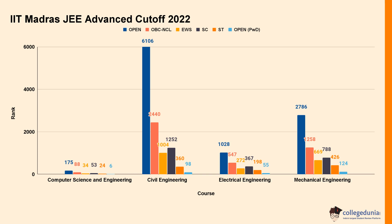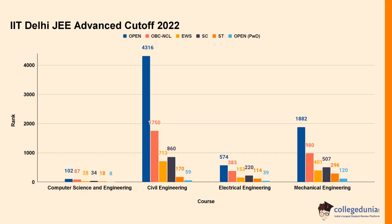For Mechanical Engineering at IIT Madras in 2022, the cut-off rank was 2786 for Open category, 1258 for OBC-NCL, 669 for EWS, and 788 for SC.